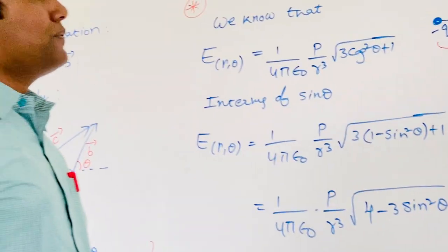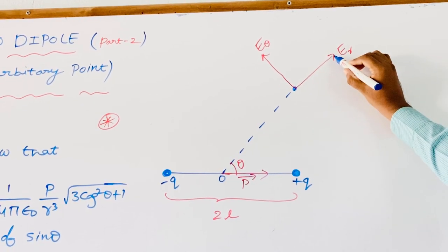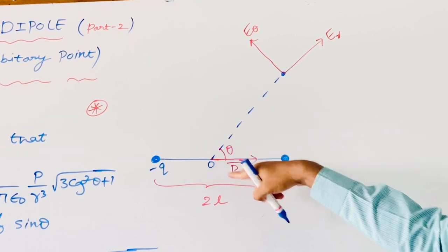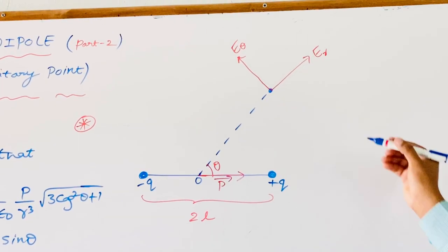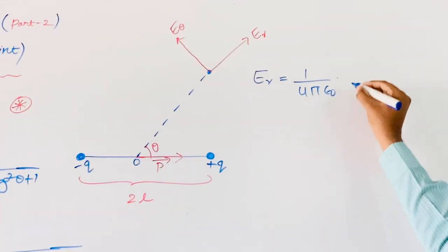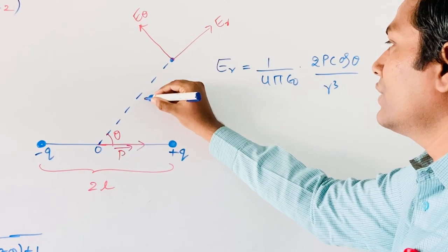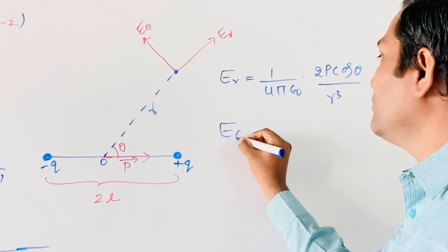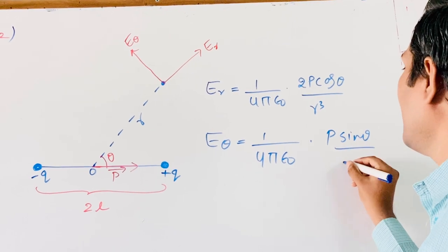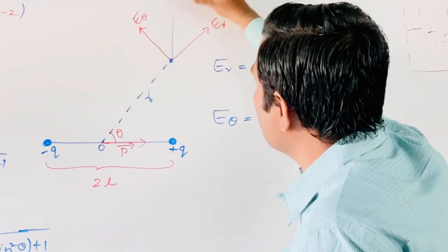Now, this is ER. As we clearly deduced in the last session, ER is the electric field due to the P cos theta component, and E theta is the electric field due to the P sin theta component. ER is equal to 1 by 4 pi epsilon naught into 2P cos theta by R cube, and E theta is equal to 1 by 4 pi epsilon naught into P sin theta by R cube. Now suppose I am taking the resultant electric field.